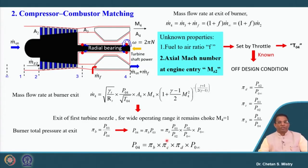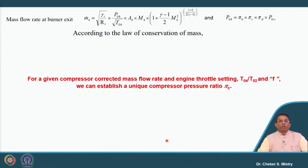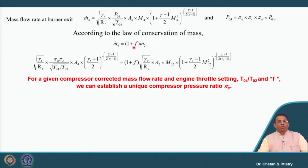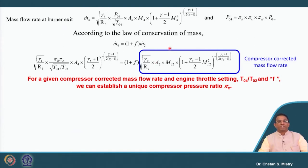Writing the mass flow balance at the exit of the burner using conservation of mass, the outlet mass flow is (1 + f) × M-dot-infinity. If we write down the formula in terms of mass flow rate at the exit of the combustion chamber and represent the entry condition of the compressor, this is nothing but the corrected mass flow rate of the compressor.